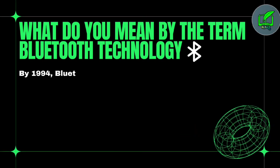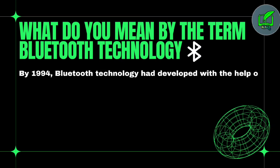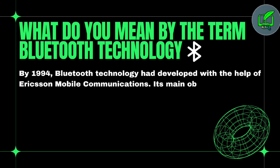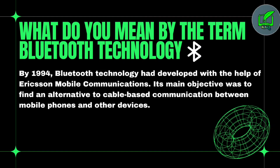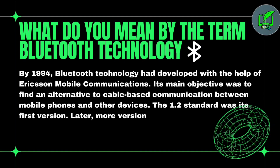By 1994, Bluetooth technology was developed with the help of Ericsson Mobile Communication. Its main objective was to find an alternative to cable-based communication between mobile phones and other devices. The 1.2 standard was its first version.